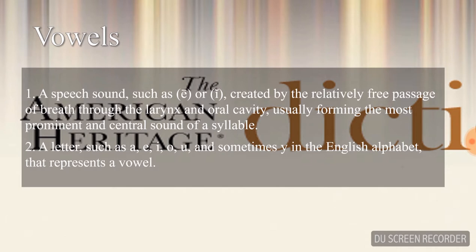The first part: a speech sound such as long E or short I, created by the relatively free passage of breath through the larynx and oral cavity, usually forming the most prominent and central sound of a syllable. The other one: a letter such as A, E, I, O, and U — also Y in the English alphabet — that represents a vowel.